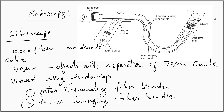After light reflects from the object, it is received by the inner imaging bundle. To make the light enter the inner imaging fiber bundle, there is a telescopic arrangement — the eyepiece and the objective lens together make the telescopic arrangement. A prism is used to make the reflected beam enter the objective lens. Once the reflected light enters the objective lens, it falls on the inner imaging fiber bundle, reaches the eyepiece, and from there one can view the image of the inner surface of the human body. That is how an endoscope works.